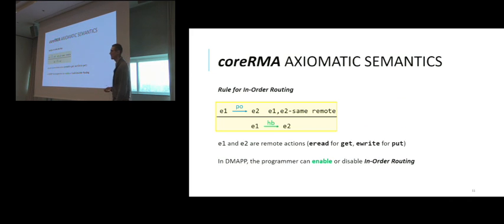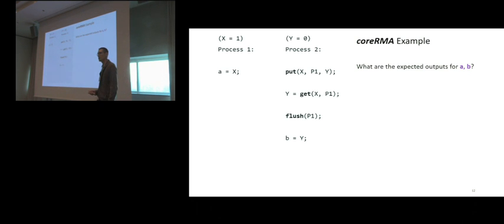Here is an example of one such rule that shows how the in-order routing guarantee provided by RMA libraries is captured by our framework. The rule says that if we have two remote actions ordered by program order, and these two actions target the same remote process, then these two actions are in happens before relation. Certain libraries such as DMAP enable the programmer to activate or deactivate this in-order routing guarantee. This property is easily captured by our framework, which allows to add or remove these rules to our original set of rules.